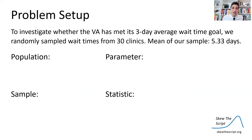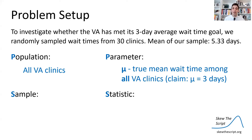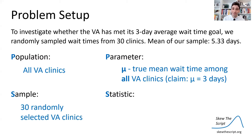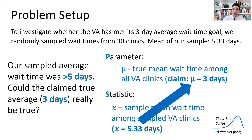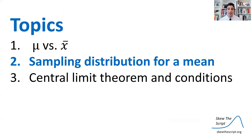Let's identify these different terms. The population we're interested in is all VA clinics, and the parameter we want to estimate is the true mean wait time — has the VA met its goal of an average wait time of three days among all its clinics? We got a sample of 30 VA clinics, and among them we found the sample mean wait time was 5.33 days, which is higher than the three days the VA is aiming for. The question is: is this so high that we would start to doubt that the true mean wait time is actually three days, or could our sample have, by chance, gotten a few clinics with unusually high wait times? We have to investigate using the sampling distribution for a mean.